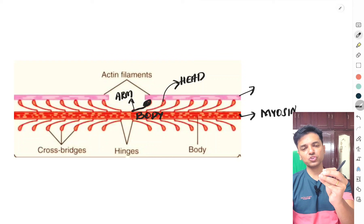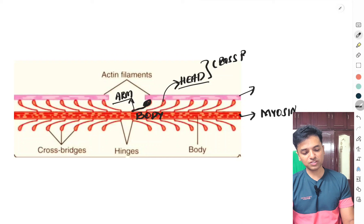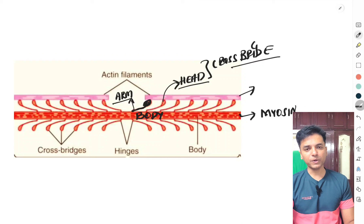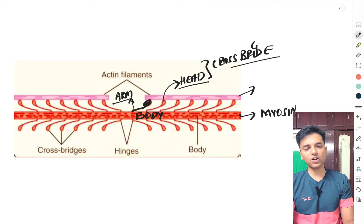The arm plus the head taken together is what is called a cross bridge. So the cross bridge is a part of the myosin, protruding out from its body with an arm and a head at the end. There are usually two heads for the myosin present in skeletal muscle, which is why this myosin is also called myosin II.